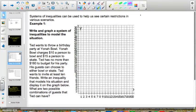So the first thing I want to do in this problem is highlight my important information. We know that it's $10 a person to bowl and $15 a person to skate. Ted has no more than $180 and he wants to invite at least 10 friends.